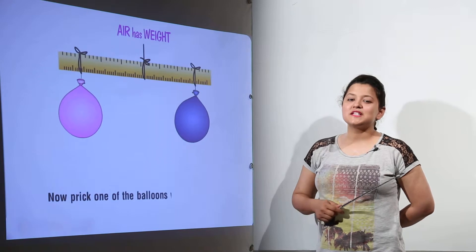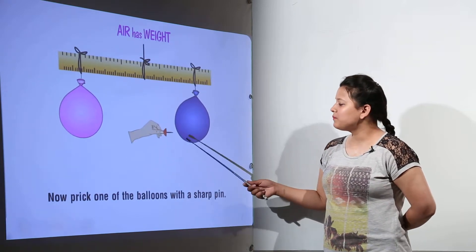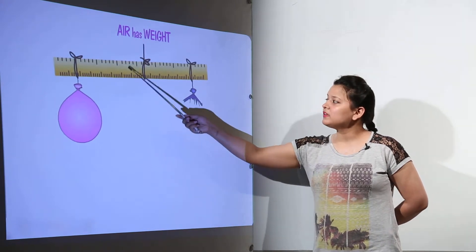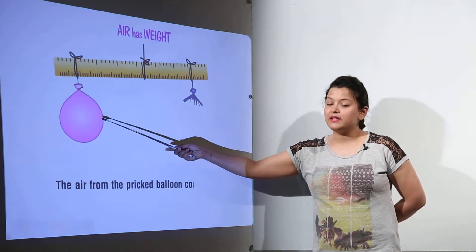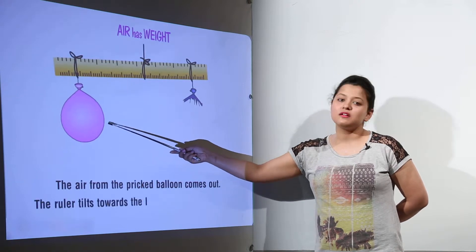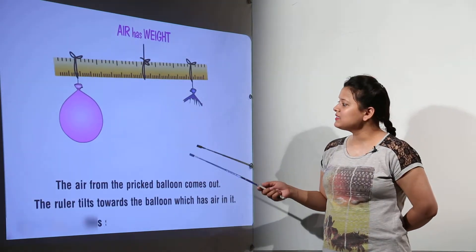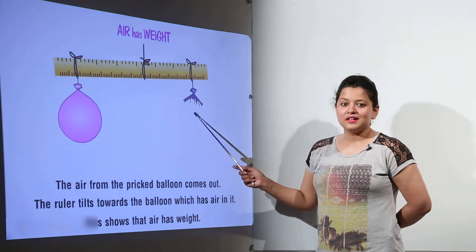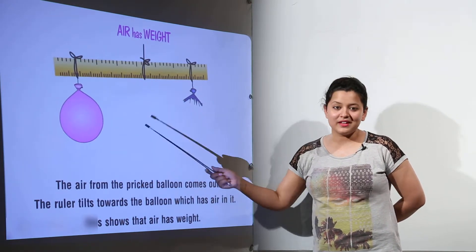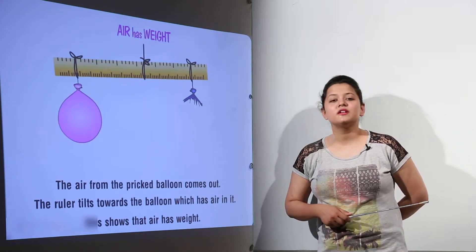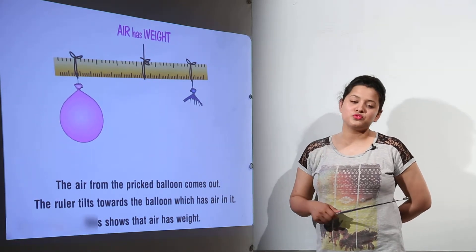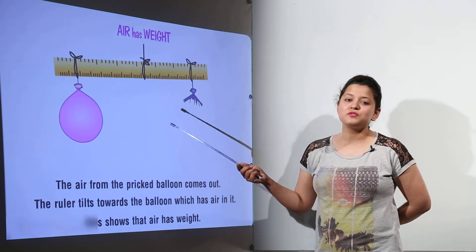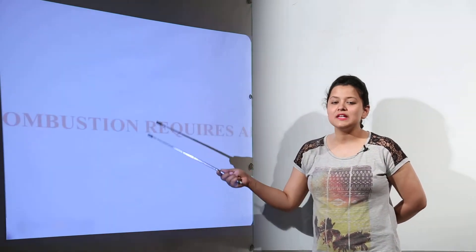Now for the experiment: take a pin and prick one of the balloons. You would notice immediately the ruler bends down toward the side where the balloon is still inflated. That means it has more weight because that balloon has air in it. Therefore we can conclude that air has weight, which is why it is able to bend the wooden ruler to either side.